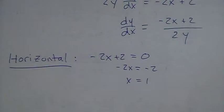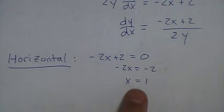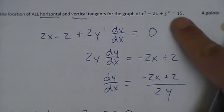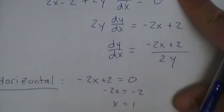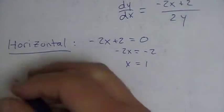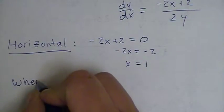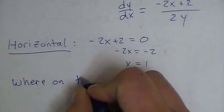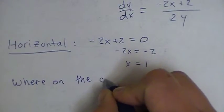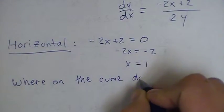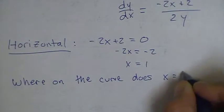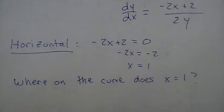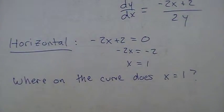This tells us that our derivative will be 0 any time x is equal to 1. What we don't know is where on this curve x is equal to 1. So now we have to figure out where on the curve does x equal 1. And this isn't something that's very difficult to do, but it is something that's necessary to do.